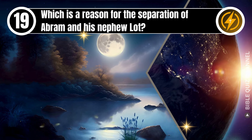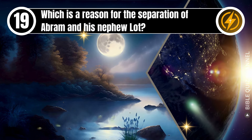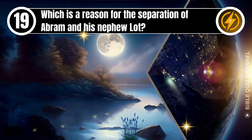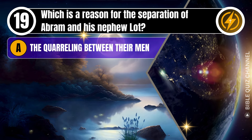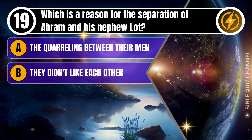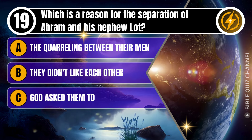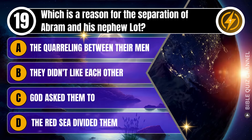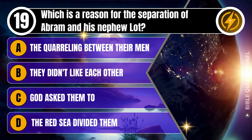Question 19. Which is a reason for the separation of Abram and his nephew Lot? A. The quarreling between their men. B. They didn't like each other. C. God asked them to. D. The Red Sea divided them. You get 10 seconds.